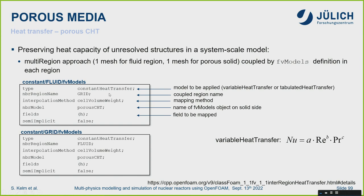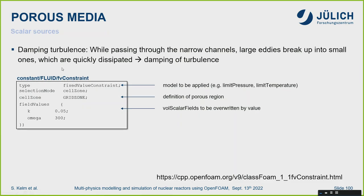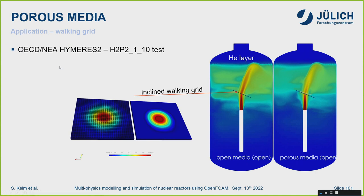We can also use porous media in conjugate heat transfer simulations — a porous domain on the fluid side and a solid domain — with source terms for turbulence damping due to porous structures. As a benchmark example: a jet flow impinging on an inclined walking grid was simulated at 3.5 million cells by resolving the grid geometry, compared to 800,000 cells using porous medium modeling. The results are pretty comparable — showing we can speed up simulations significantly while still representing structures that cannot be neglected.